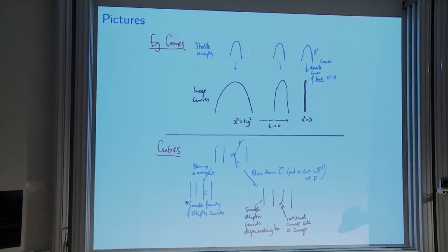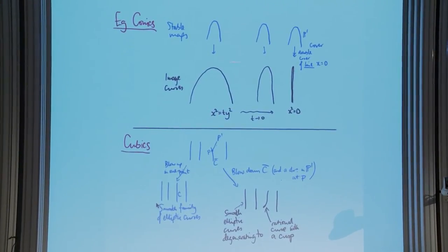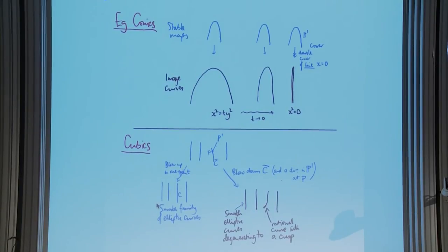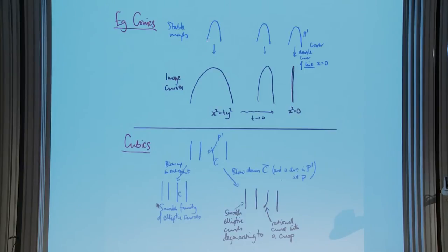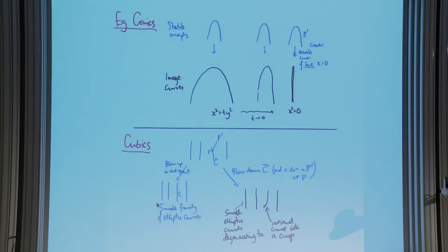An example is conics in P2: you might have conics x² = ty² degenerating to a double line. In stable map land the degeneration is different — you take the embedding of P1 as a conic, but in the limit you can't take the scheme directly because that's not a nodal curve. What you find is the limit of the parametrized curves is the double cover of the line x = 0, with branch points at the intersections of nearby conics with that line.